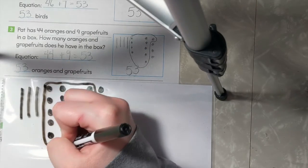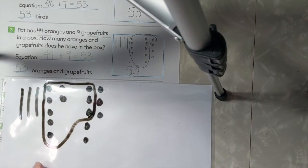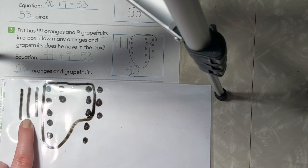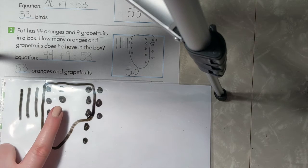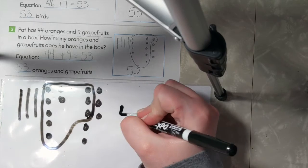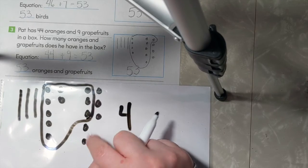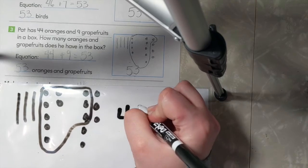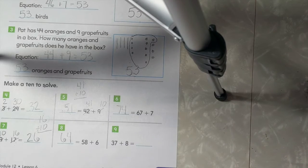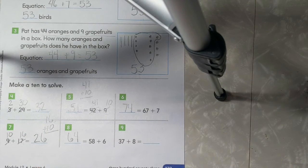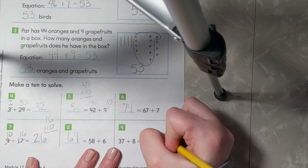7 plus 3 equals 10. 10, 20, 30, 40, and 1, 2, 3, 4, and 5. So 37 plus 8 equals 45.